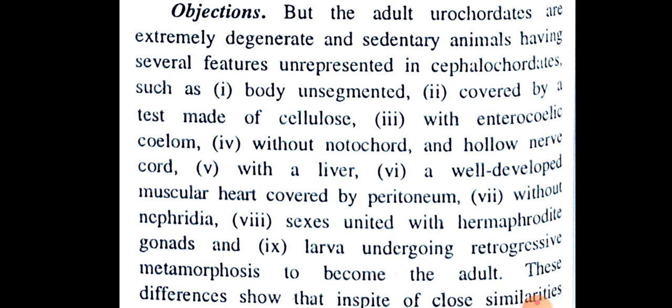However, Urochordates differ in having: body unsegmented, covered by a test made of cellulose; enterocoelic coelom; without notochord and hollow nerve cord; with a liver and a well-developed muscular heart covered by peritoneum; without nephridia; sexes united with hermaphrodite gonads; and larvae undergoing retrogressive metamorphosis to become the adult.